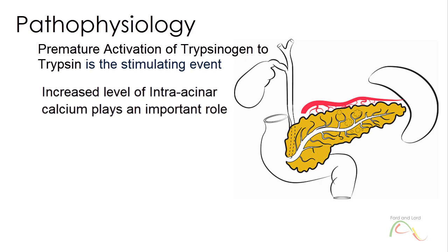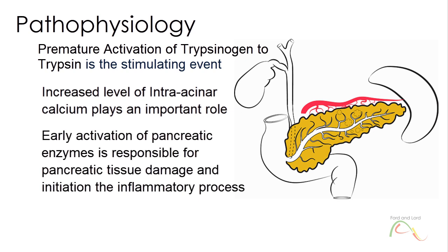Trypsinogen becomes trypsin resulting in activation of many enzymes, for example, elastase and phospholipase. Early activation of these enzymes leads to localized tissue damage, causes accumulation of neutrophils, and initiation of inflammatory process. The inflammatory process can lead to increased capillary permeability and damage to the endothelium with microvascular thrombosis.